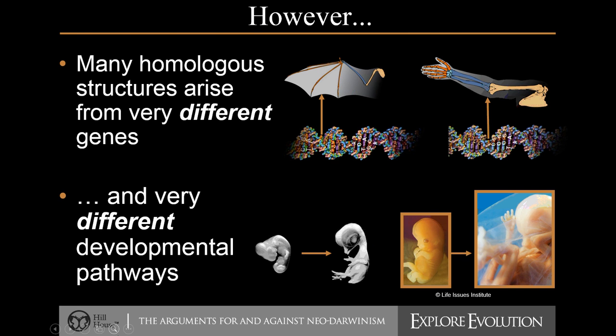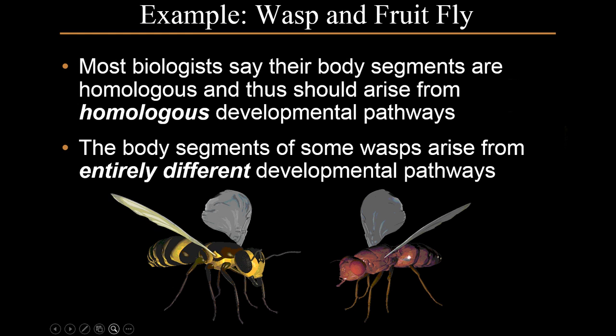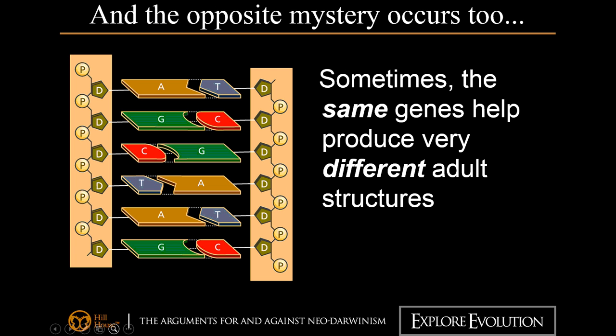However, when we look at specific structures and examine the genes responsible for determining those structures, as well as how they develop in terms of the embryo, we see some differences. One example is looking at the body segments of both a wasp and a fruit fly. Many biologists say those body segment patterns are produced by homologous developmental pathways. However, when we look at them closely, we see they're actually produced by different pathways. And sometimes the opposite is true — we find very similar genes within two organisms, but the end result is a structure that doesn't look anything like the other.